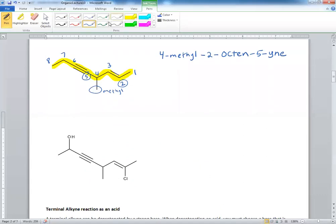Now, if you have an alcohol, you have to, of course, number from where the alcohol starts, because it gets the highest priority. So you go 1, 2, 3, right here, 4, 5, 6, 7, and 8.